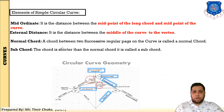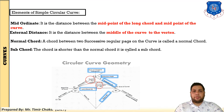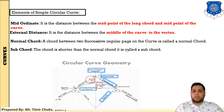Thirteenth, normal chord: a chord between two successive regular pegs on the curve is called the normal chord. The distance between two consecutive points on the curve is the normal chord. Fourteenth, sub-chord: a chord that is shorter than the normal chord is called the sub-chord.